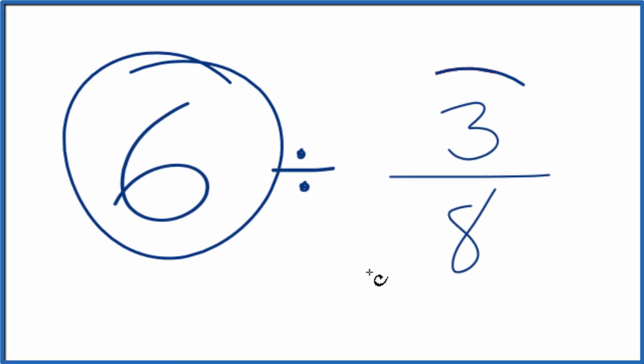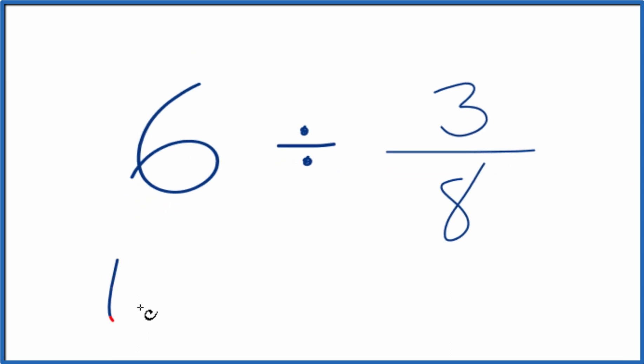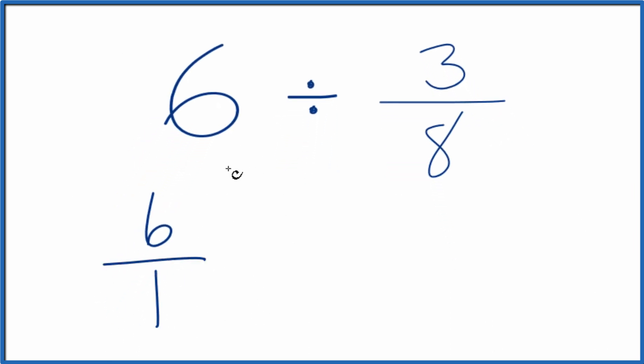Let's divide 6 by 3 eighths. Here's how we do it. So let's call this 6 over 1. It's still 6, we're just dividing by 1, but now we have a fraction here.